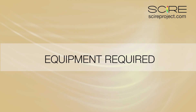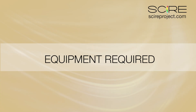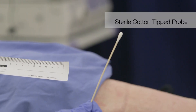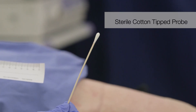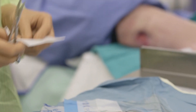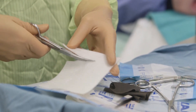A dressing tray and the assessment environment should be prepared in advance according to each client's needs. This will include a disposable measuring ruler and a sterile cotton-tipped applicator or probe and gloves. You should also include all materials required for proper redressing after the assessment.